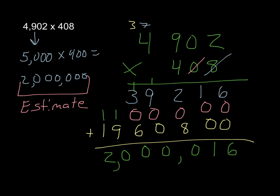Here's what it looked like when I solved it. I rounded 4,902 to 5,000 and 408 to 400, getting an estimate of 2,000,000. And when I solved it, I had 2,000,016.